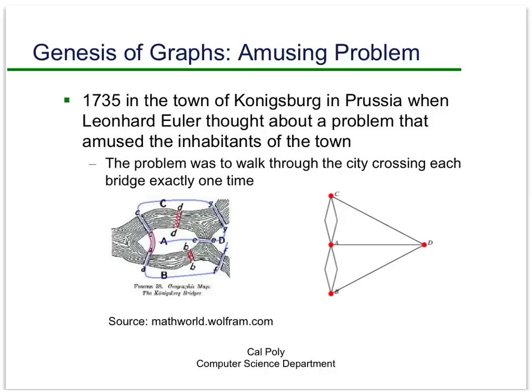They would try to walk through the town crossing each bridge exactly once. Euler, noticing this problem, said we can get rid of a lot of the unnecessary detail if we represent it like this, where each of the dots represents a piece of land. A here represents the island in the river.